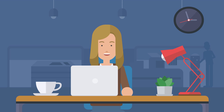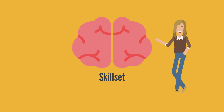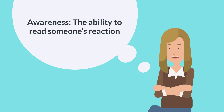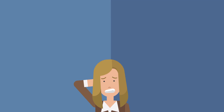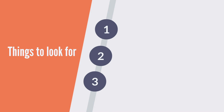Have you ever noticed when a conversation in the target language isn't going well? Disagreements and conflicts are a normal part of interactions, but you have skills to help you navigate them. Awareness, or the ability to read someone's reaction, allows you to adjust your conversational approach based on how the other person reacts. There are many things you can pay attention to if you think something might not be going well in a conversation. Let's discuss three examples you can look for.